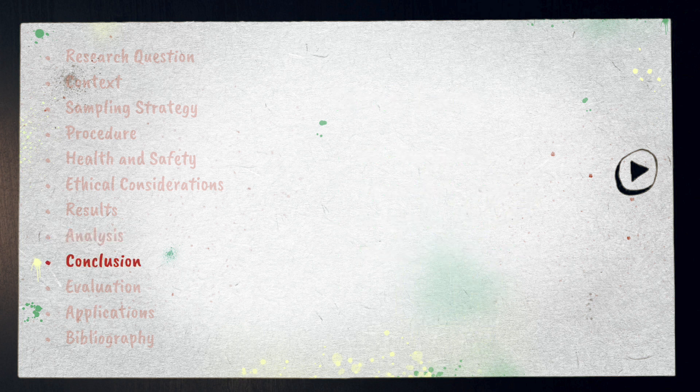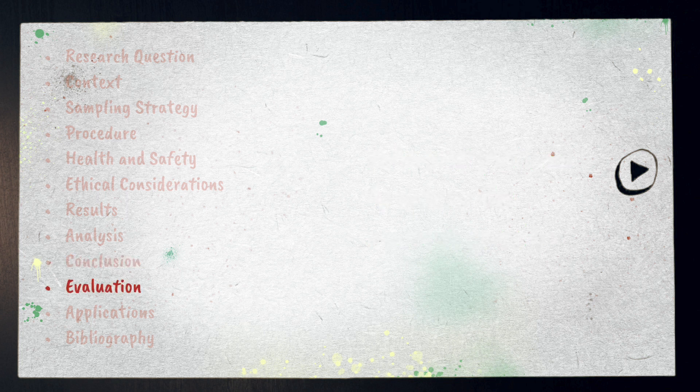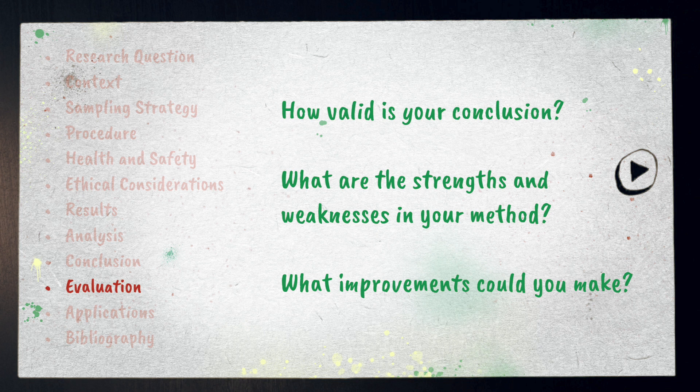A conclusion should be very easy to write if you've done the analysis correctly — you just need to interpret the patterns you've presented to answer the research question. The evaluation should discuss the validity of your conclusion. You should discuss the strengths and weaknesses in your method and also the improvements you could make.